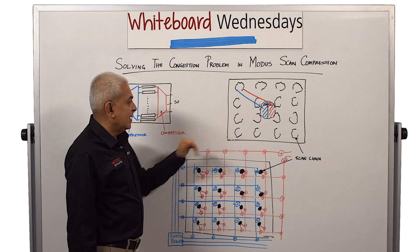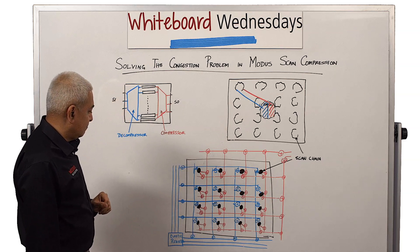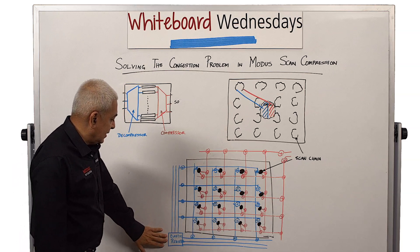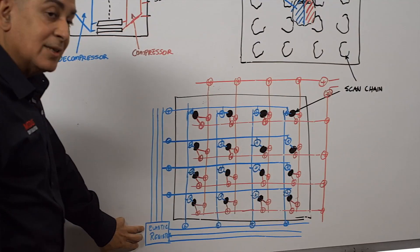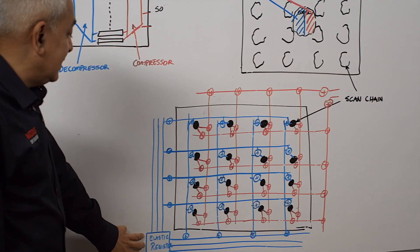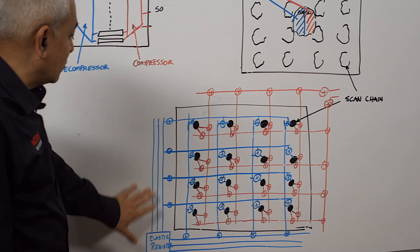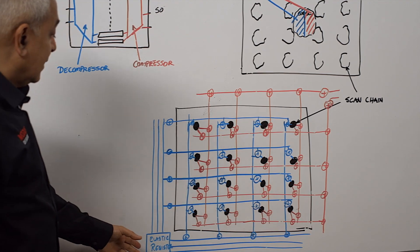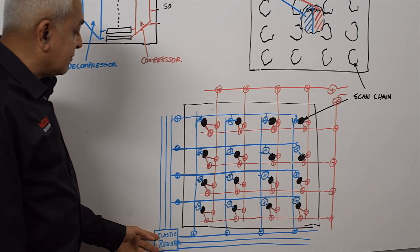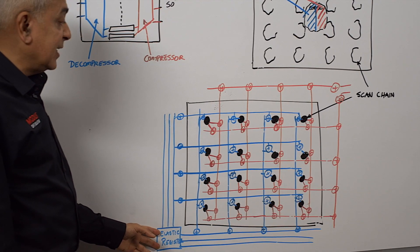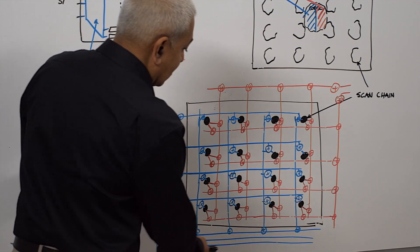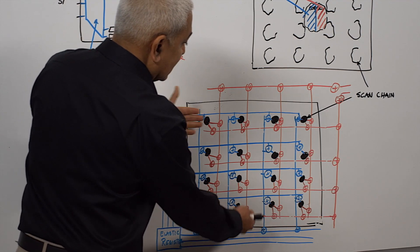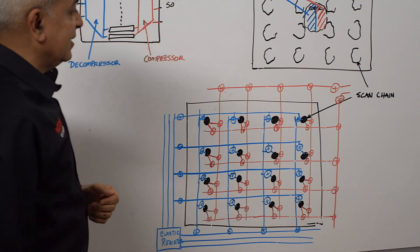So to solve this in MODIS, what they have done is the elastic register is located in one corner of the design out here. I'm going to first talk about the decompressor. You can see that the values of the elastic register are then sent along a grid that is going along the XY coordinates to all the chains in the design.